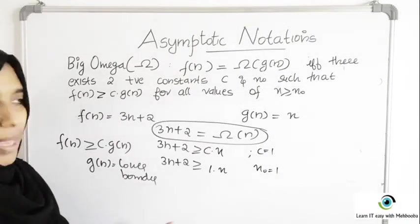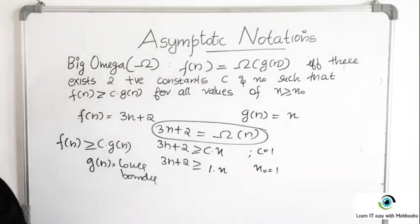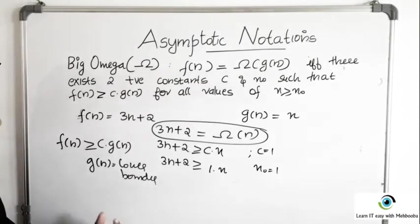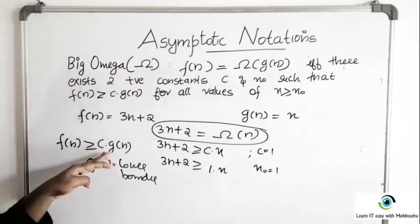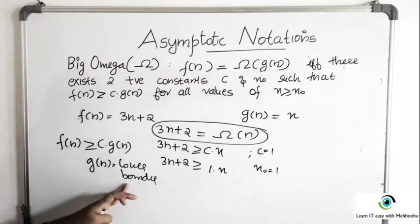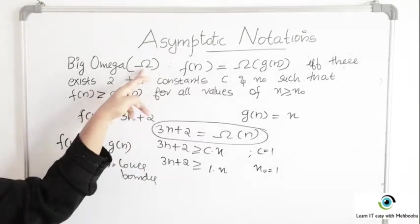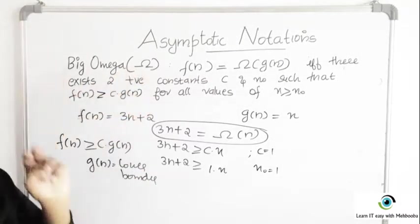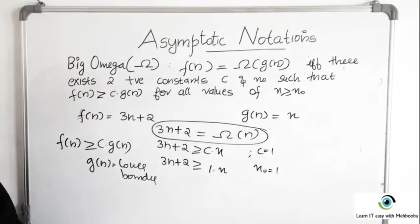I have explained best case, worst case and average case complexity in the previous video — please refer to that if you don't know. G of N is always less than F of N, meaning G of N is a lower bound. In other words, Big Omega gives you the minimum complexity or the best case complexity.